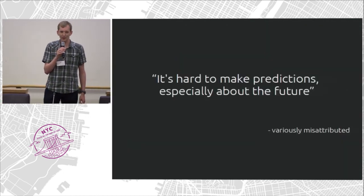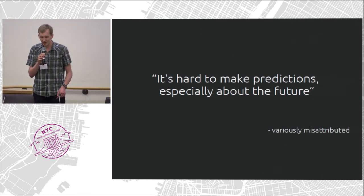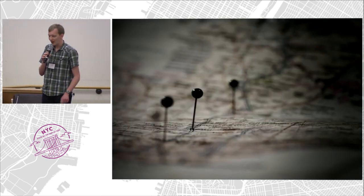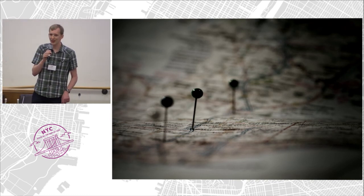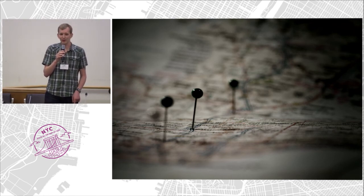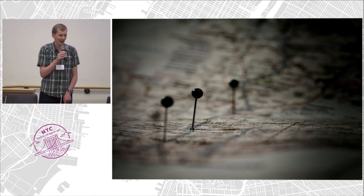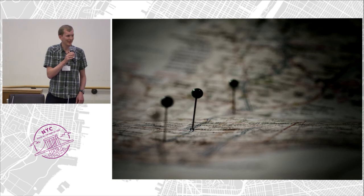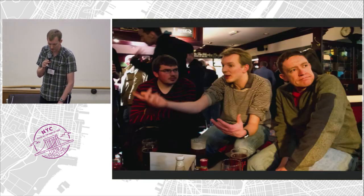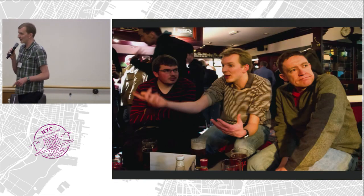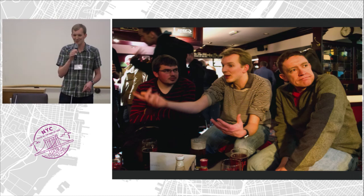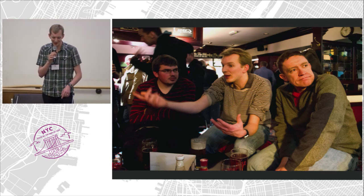There's a variously misattributed quote, often to Niels Bohr, saying it's hard to make predictions, especially about the future. So bear that in mind. It would be great to stand up and say this is the roadmap for OpenStreetMap — but there isn't a roadmap. The other spoiler is there isn't even a secret roadmap. There's also the question of whether there's even a team to do the future of OpenStreetMap, and not everybody will believe my ideas when I say they're good.